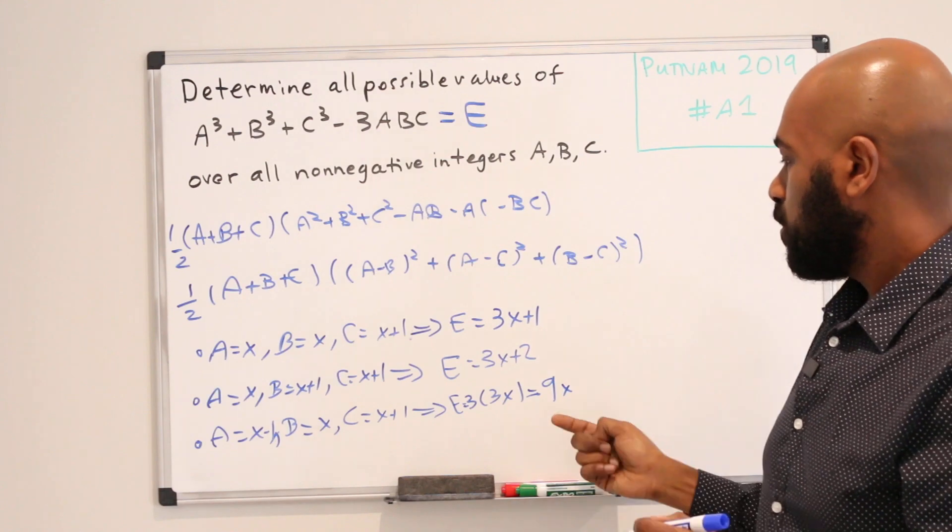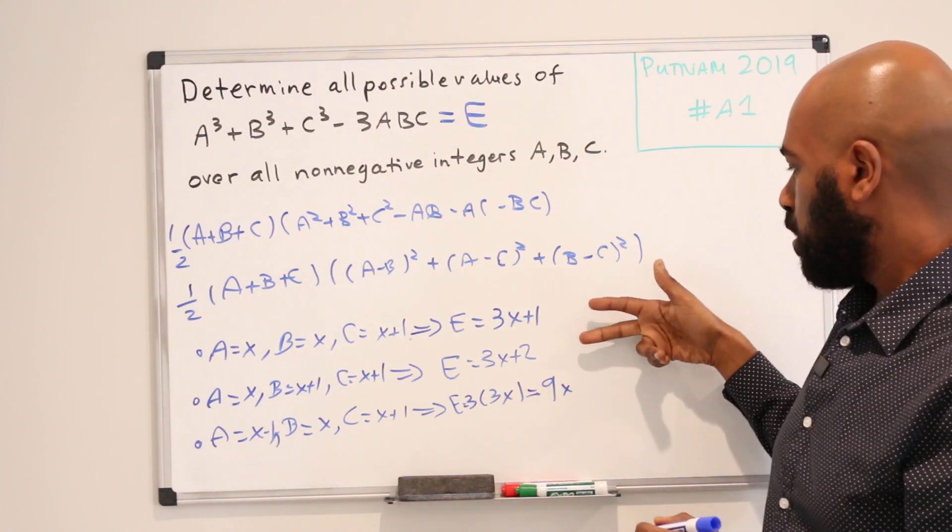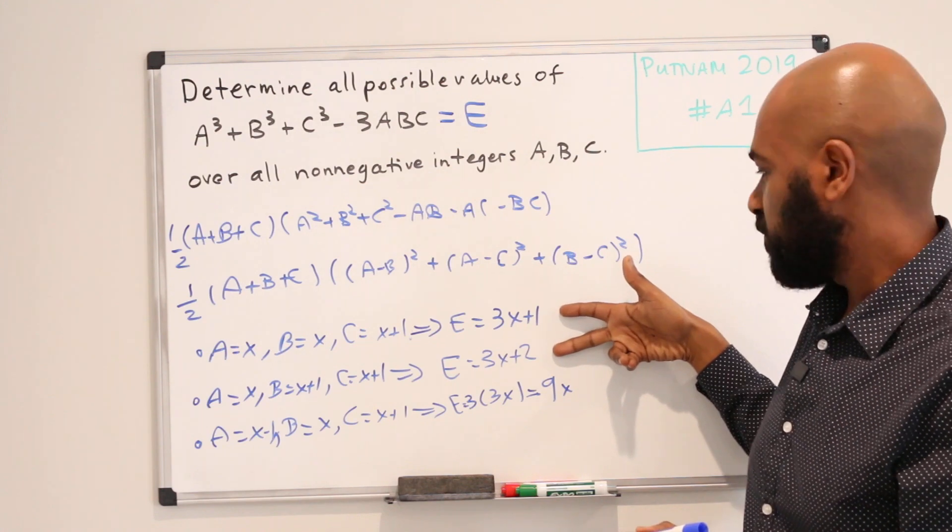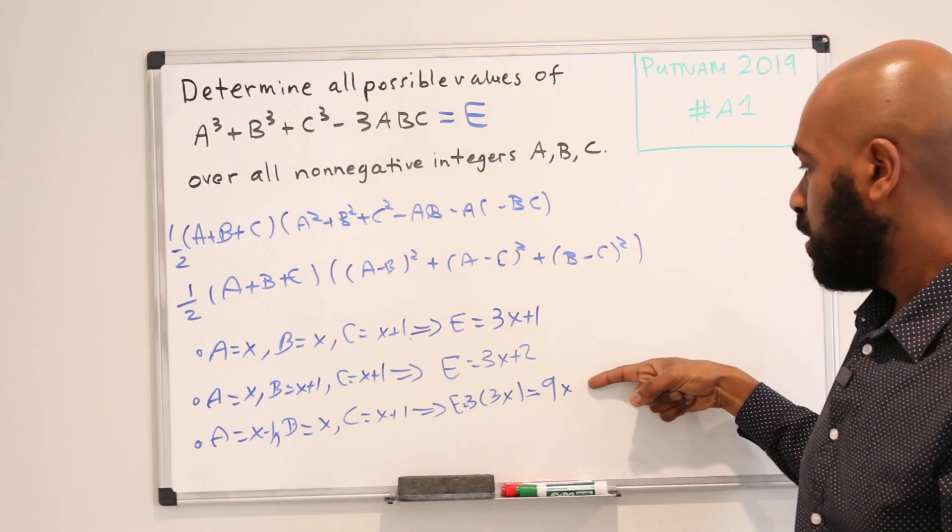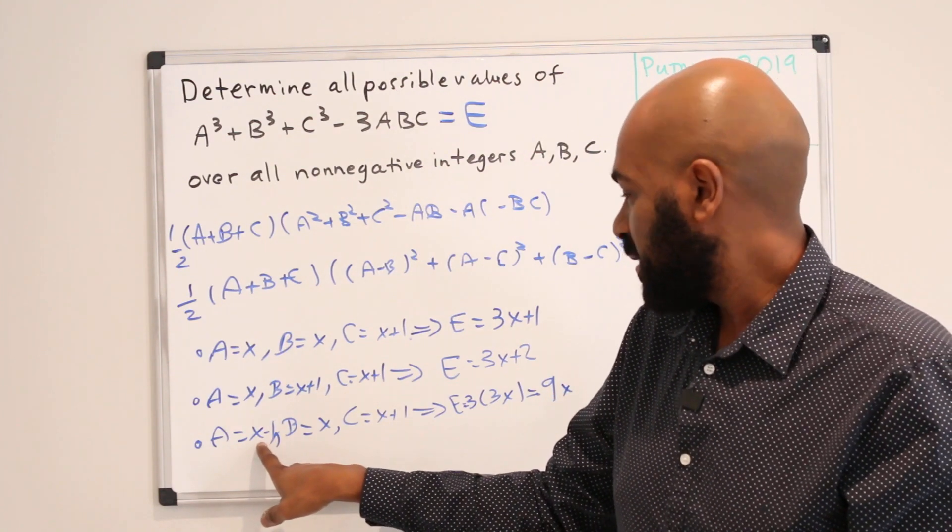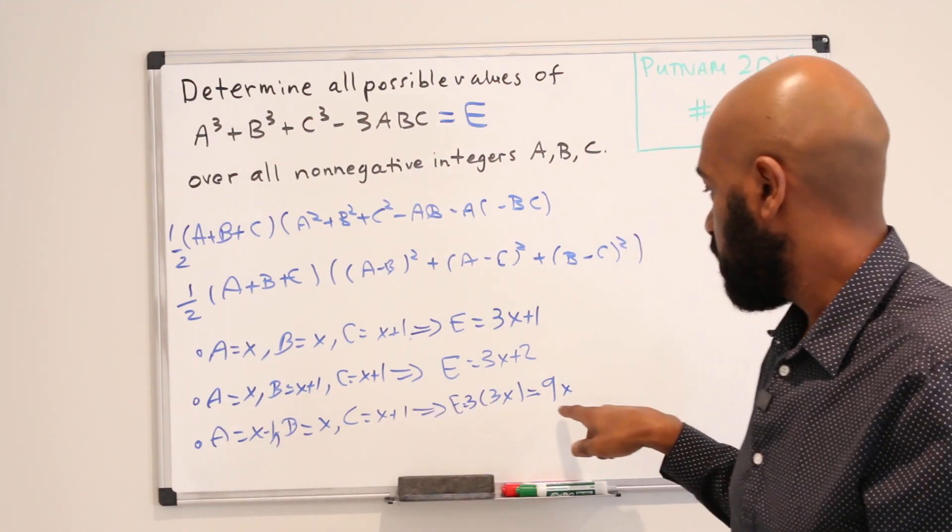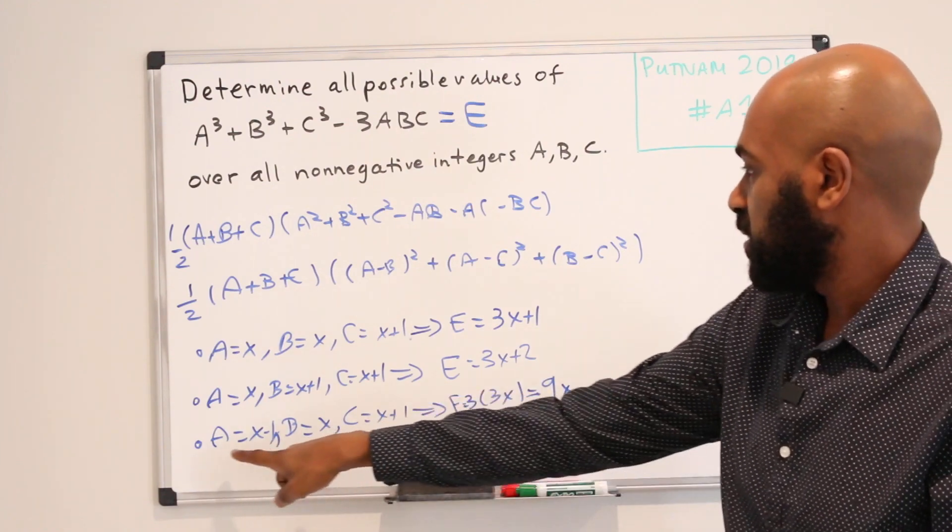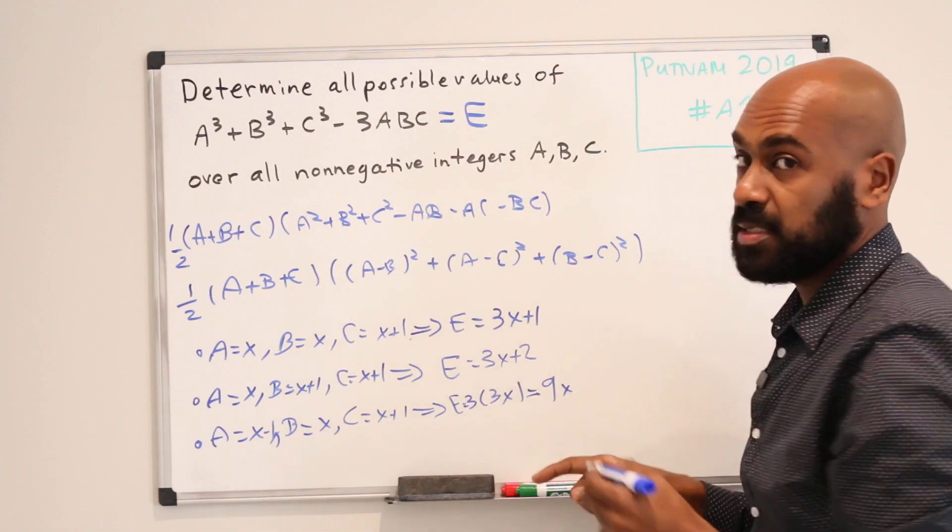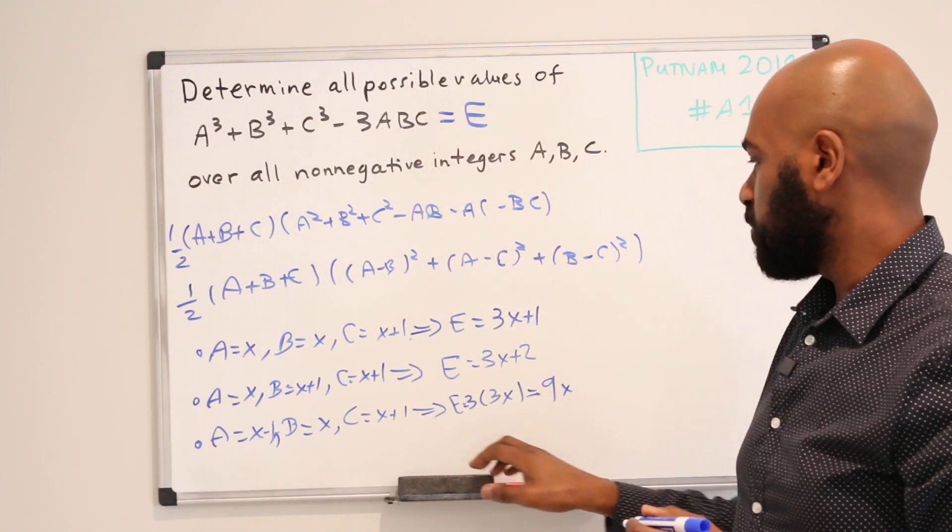Okay, so we see from this that we can get all non-negative integers that are not multiples of 3. And then we can get all non-negative integers that are multiples of 9. We have to be careful though, X can't be 0 here because that would make A a negative number. But we can get 0 by setting A, B, and C to be 0. So we do get all multiples of 9.